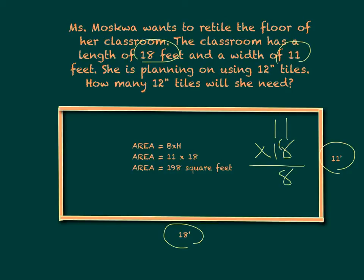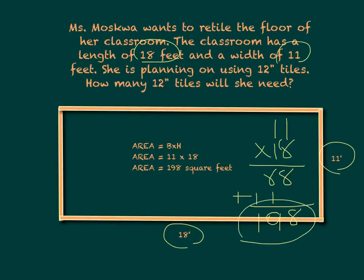To find the area, we multiply 11 times 18. Working through the multiplication: 8 times 1 is 8, 1 times 1 is 1, and adding gives us 198. So the number of tiles she will need to tile this classroom will be 198 square-foot tiles.